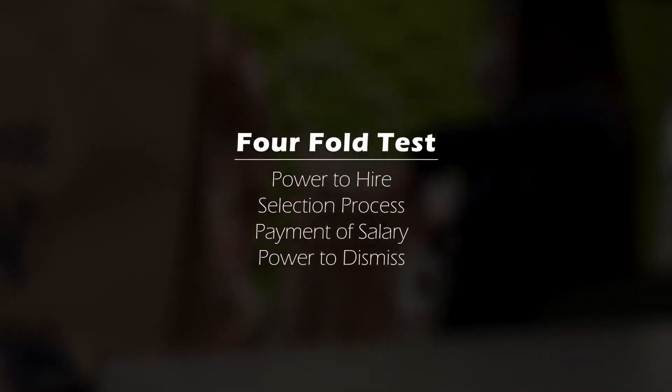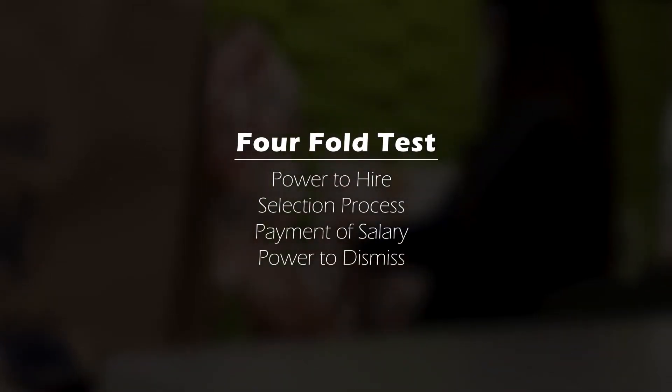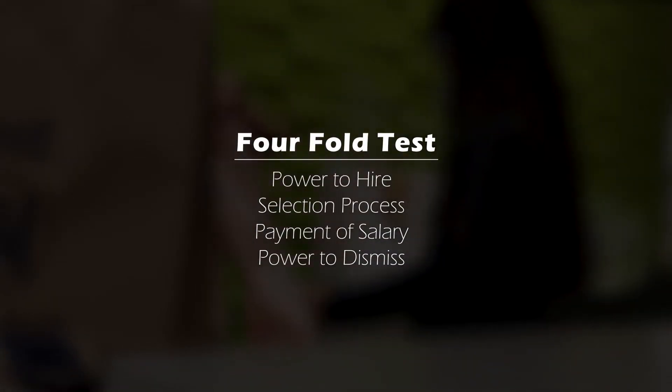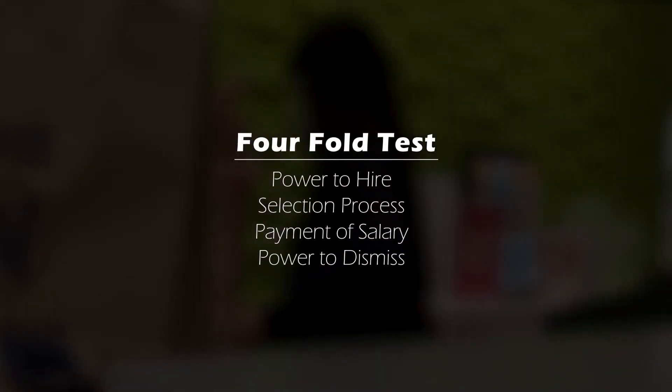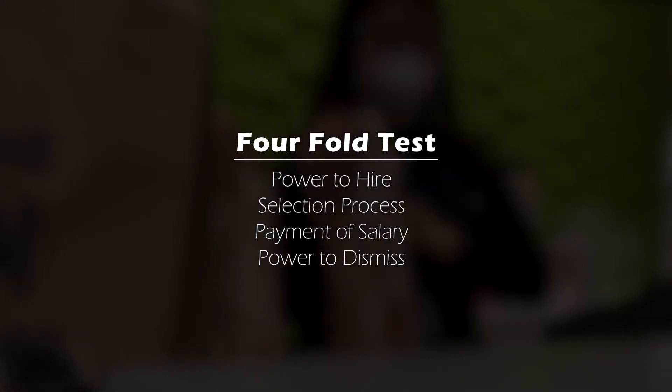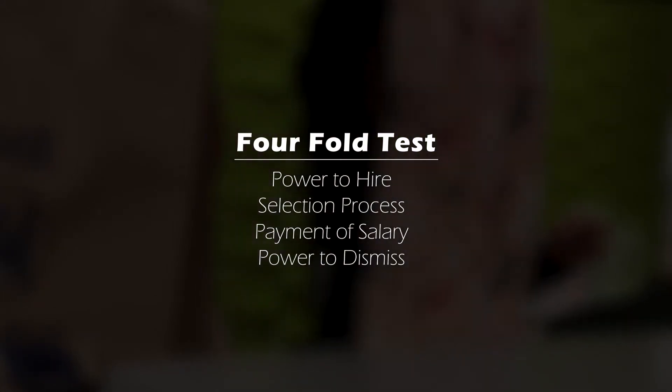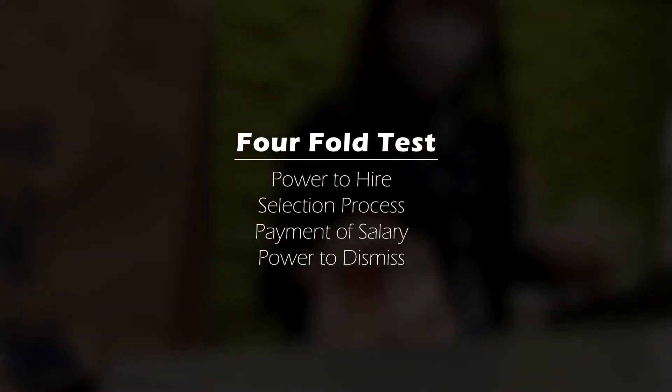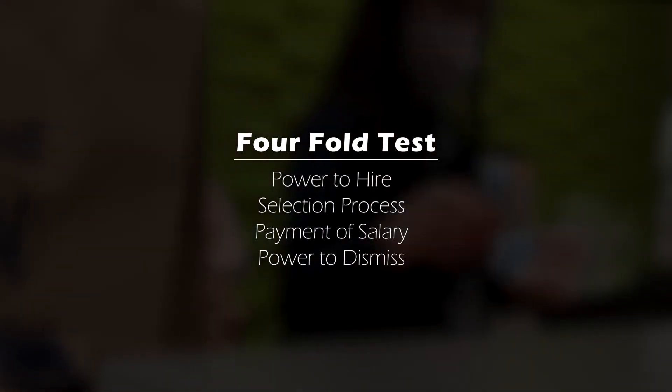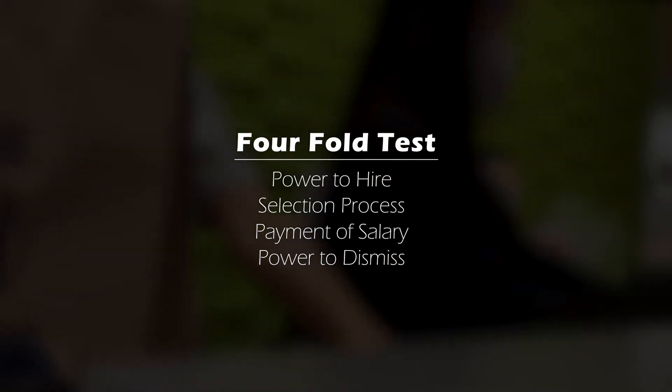To determine employee status, there are four factors: first, there is power to hire; second, there is a selection process; third, there is payment of salary; and fourth, the power to dismiss by the employer.